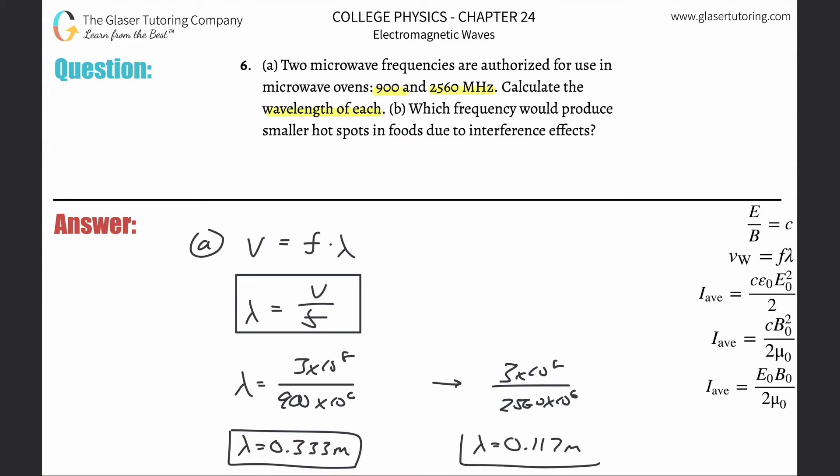At the larger frequency, they're inversely related. And as you can see, as the speed is constant, increasing frequency leads to decreasing wavelengths. And then it says which frequency would produce smaller hotspots and food. Smaller wavelength heats the food up a little more evenly.